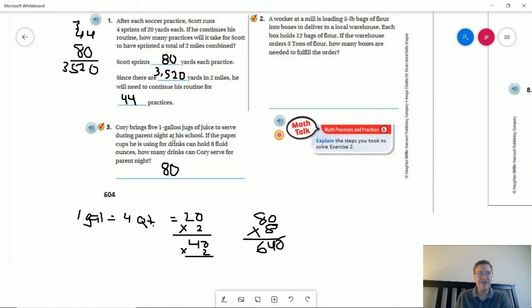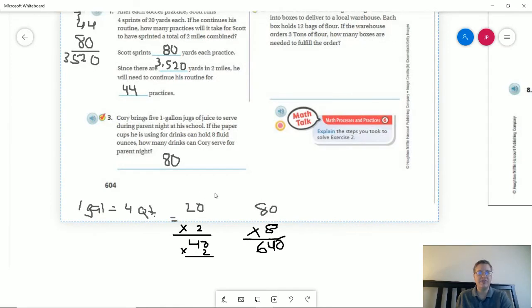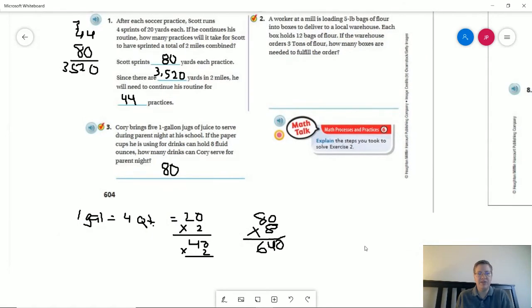Number three, so we have five one gallon jugs. If we are using paper cups that hold eight fluid ounces, let's go down to the bottom here. I'm gonna put that back where it was. One gallon is equal to four quarts and so we want to try to get all the way down to the number of ounces. So one of the things that we can do is one gallon is equal to four quarts, we have five gallons to start with so five times four would give us 20 quarts.